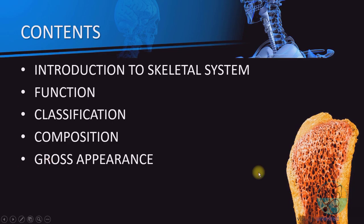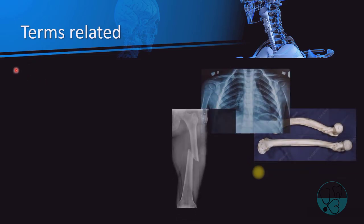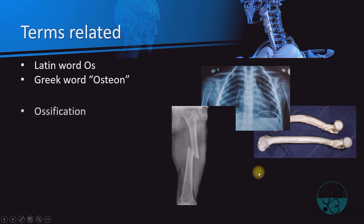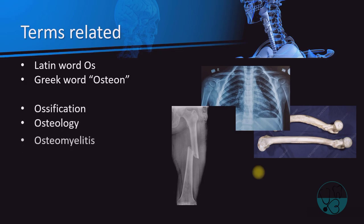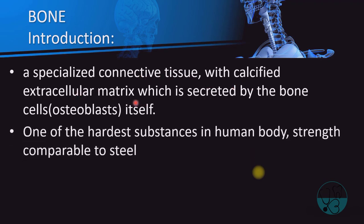The term in osteology is derived from the word 'os' in Latin and 'osteon' in Greek. You might have heard these terms related to bones. Bone is nothing but a connective tissue — a specialized connective tissue with calcified extracellular matrix which is secreted by the bone cells or osteoblasts itself. It is one of the hardest substances in the body, the strength of which is comparable to steel.